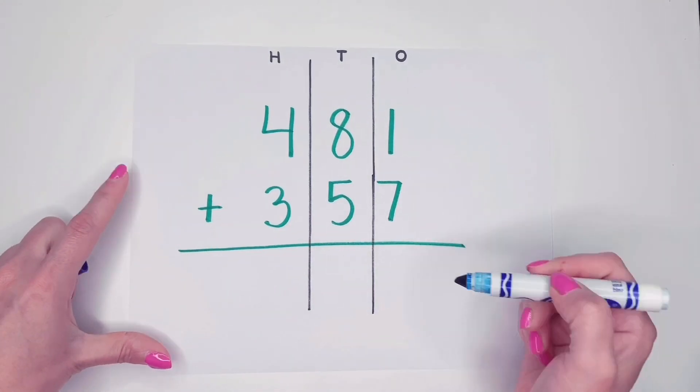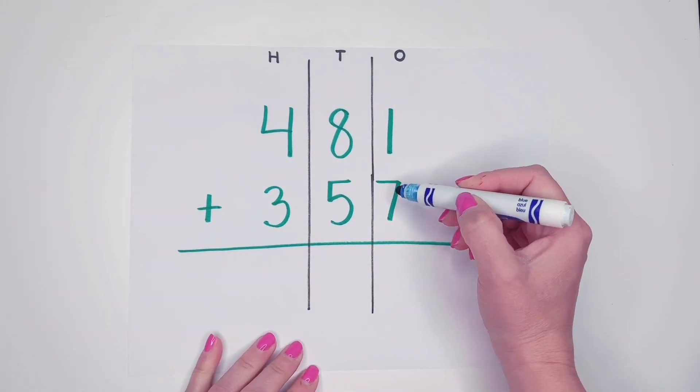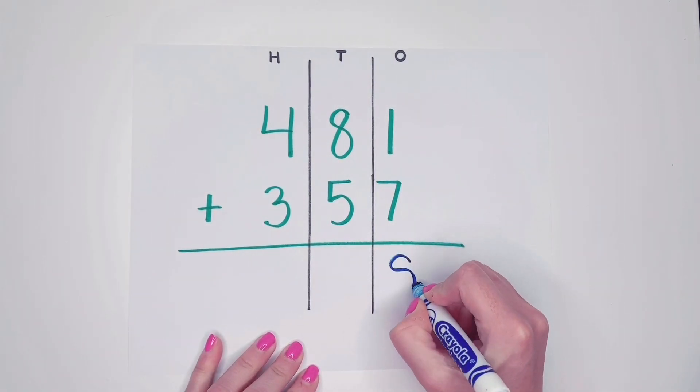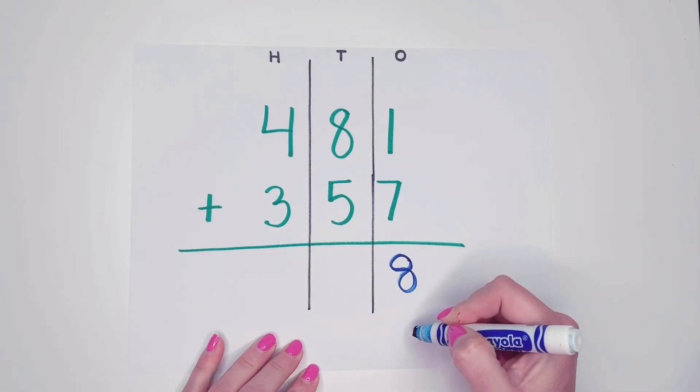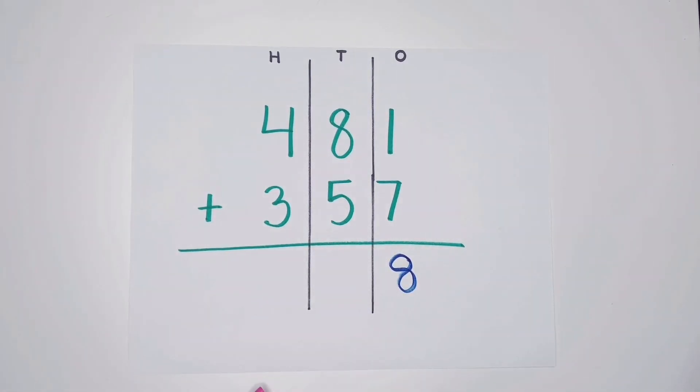So basically we're going to start with our ones. So seven plus one I know is eight. Nine or less, let it rest. So I don't have to do anything more with that eight.